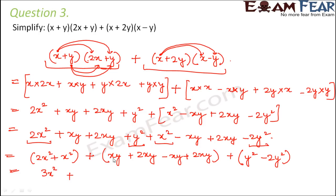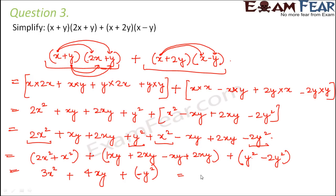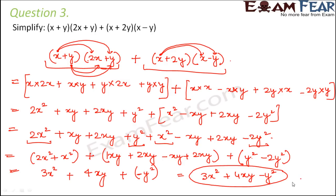Here let us add all the terms with a plus sign: 1xy plus 2 is 3, plus 2 is 5xy. Then 5xy minus 1xy is 4xy. And finally, y squared minus 2y squared: 1 minus 2 is minus 1, so minus 1y squared. Therefore this equals 3x squared plus 4xy minus y squared, which is the final answer.